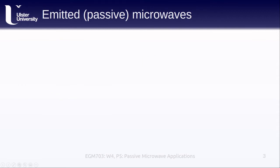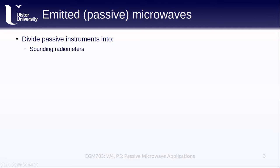Before we jump right in, we should talk a little bit about emitted or passive microwaves and how we measure these. We can divide instruments that measure passive microwave radiation into two main varieties. The first, sounding radiometers, are primarily used to study atmospheric properties. The second, imaging radiometers, operate a bit more like what we're used to — the antenna of the sensor moves in order to create a two-dimensional image of the radiation that is emitted from a given area.